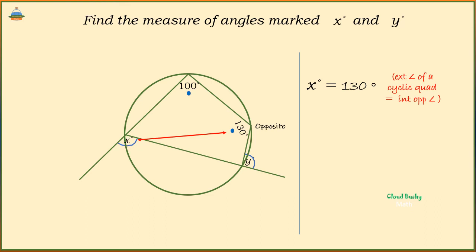The reason being, the exterior angle of a cyclic quadrilateral is equal to the opposite interior angle. So X is 130 degrees.